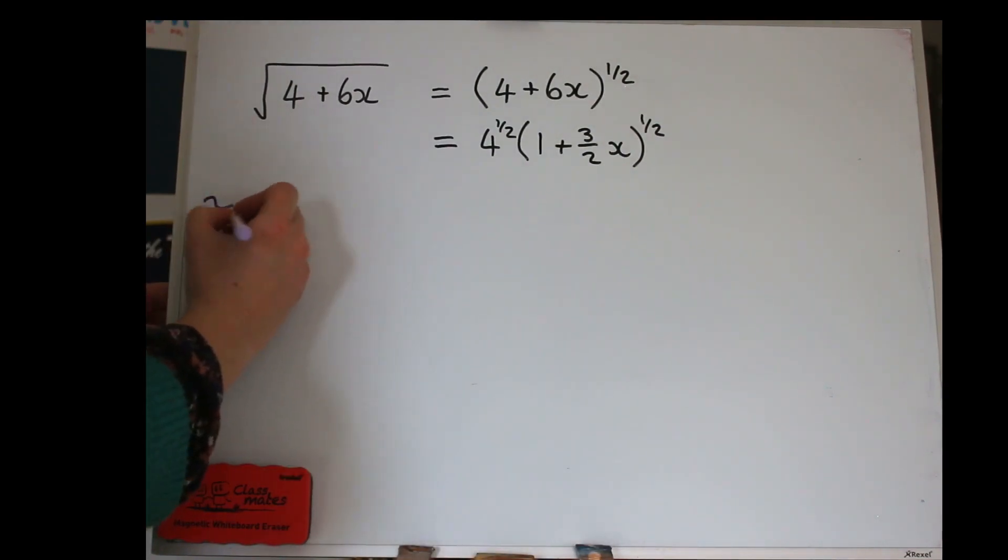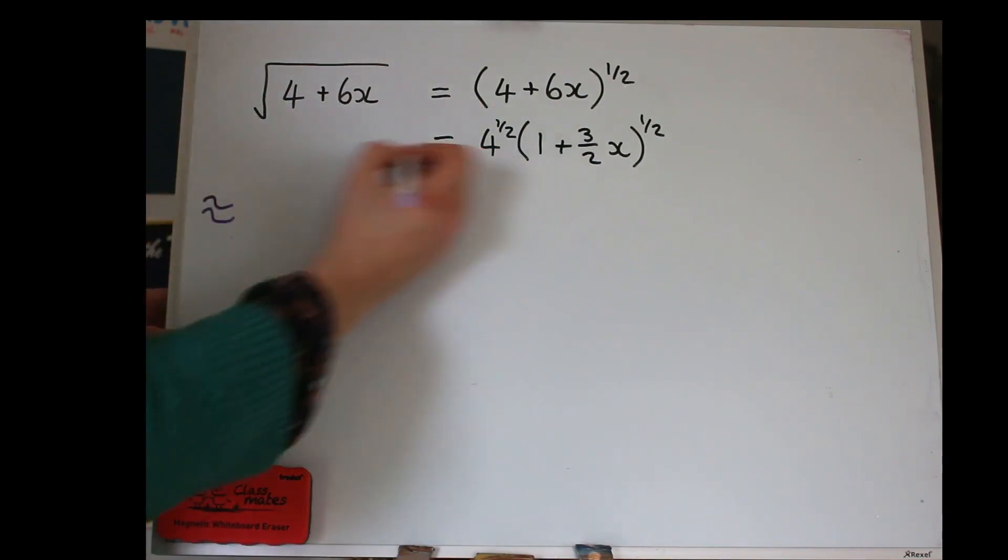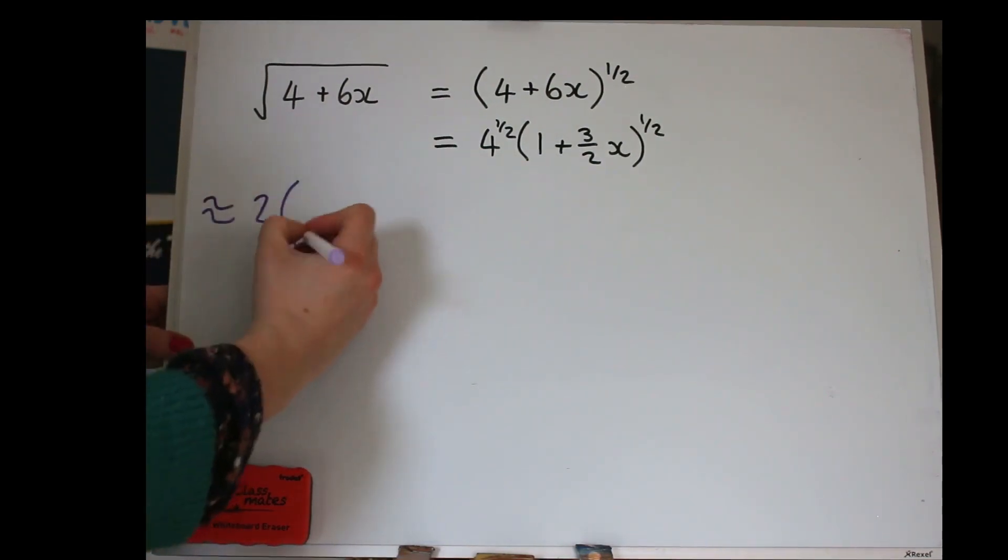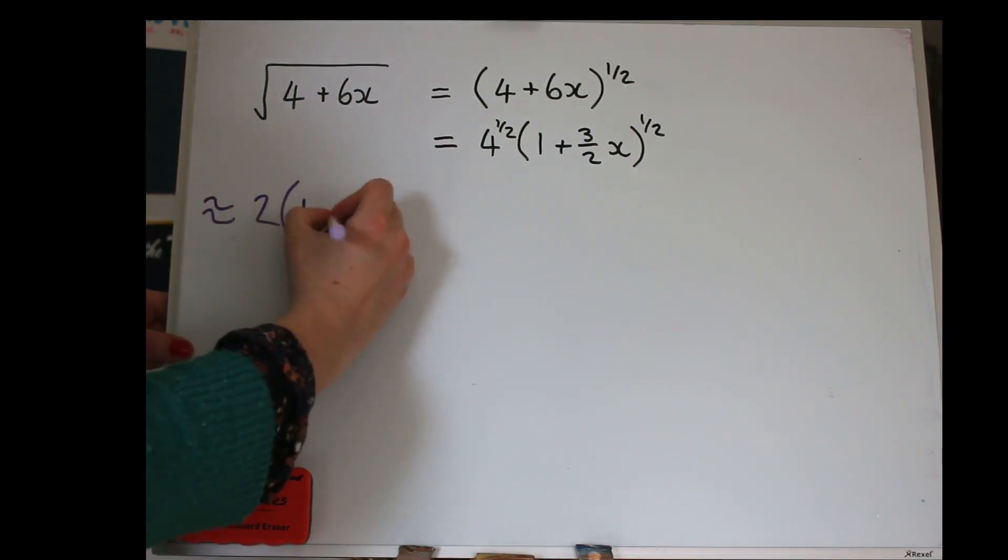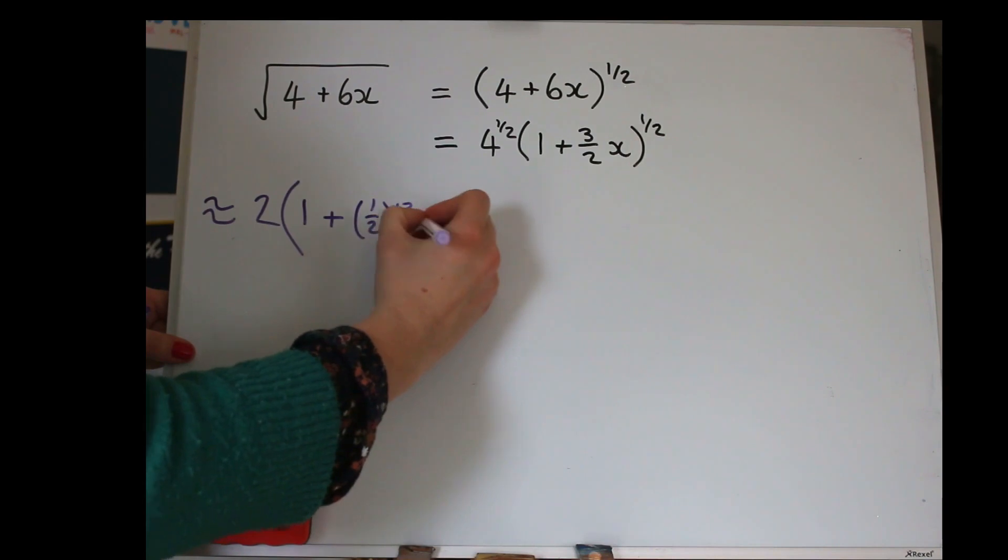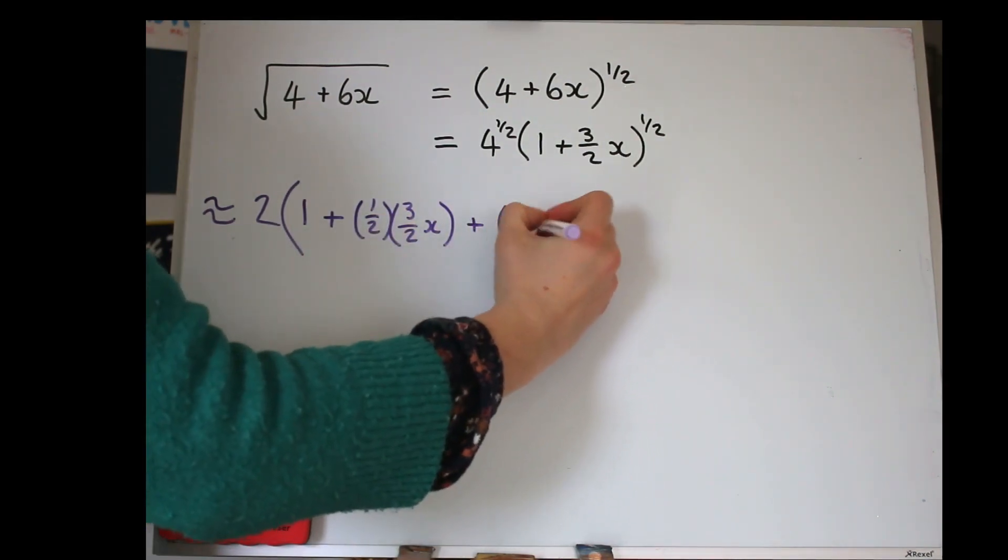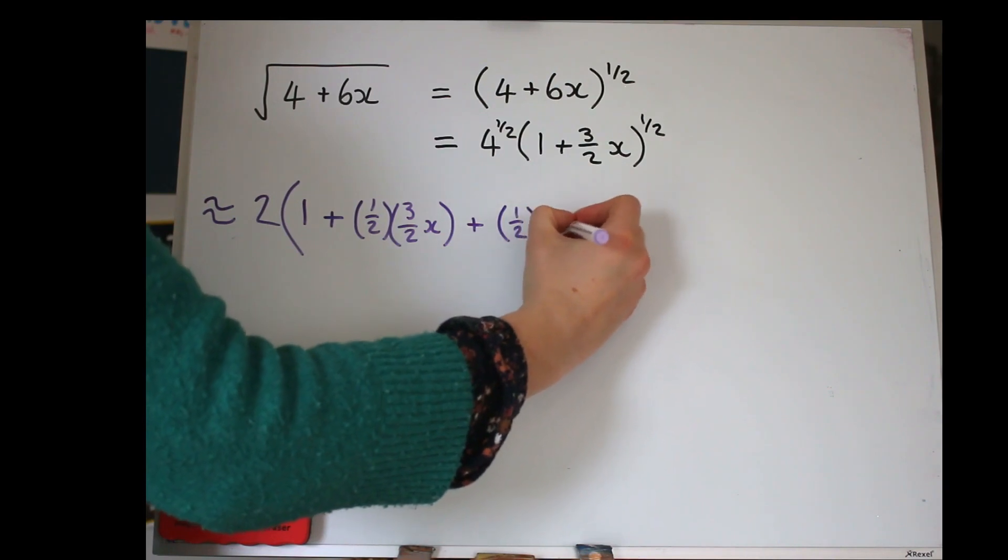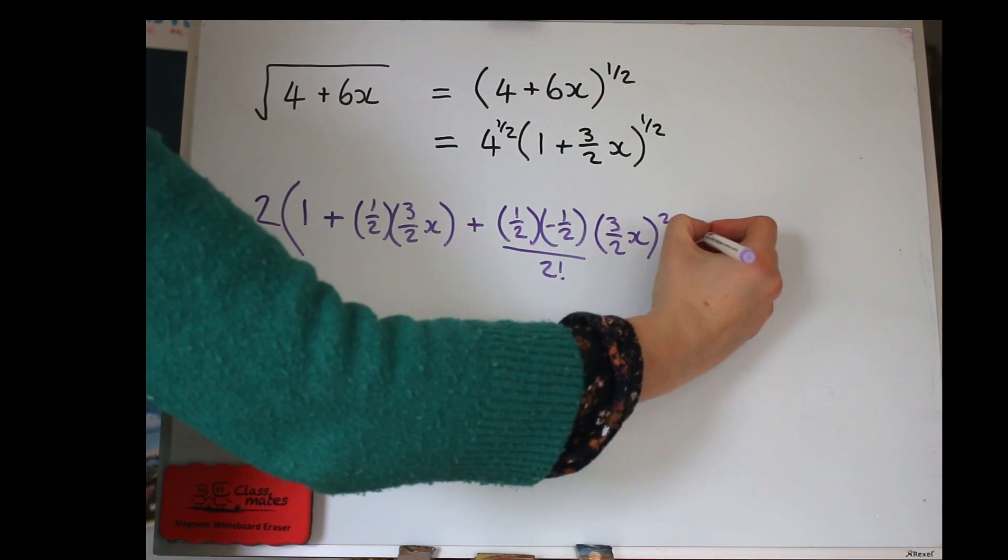4 to the power of a half is 2, so you can just put 2 at the front of all the formula. So, let's have a go. I'm going to use some squiggly equal sign to show that I'm approximating here, and 4 to the power of a half is 2, so I'll open up some big brackets with 2 on the outside, and let's use the formula. So, starting with 1 plus NX, N is a half, and X is 3 over 2X, N, N minus 1 will be minus a half, and we'll do one more.